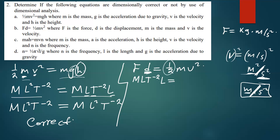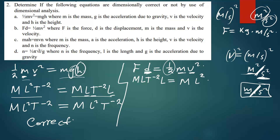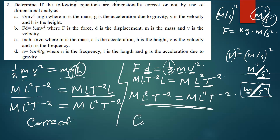On the right side, the ½ is a constant we ignore. We have mass M, and velocity squared gives L²T⁻². So the right side is ML²T⁻². Comparing both sides: left gives ML·L = ML²T⁻², right gives ML²T⁻². This is also a correct equation.